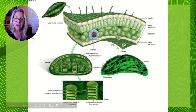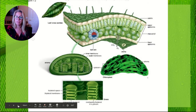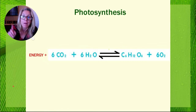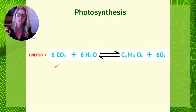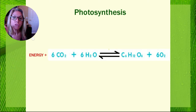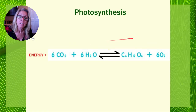Now the overall reaction — you've seen this before. In class I'm going to have you identify what gets reduced and what gets oxidized. The energy comes from the sun. CO2 is going to get reduced into glucose — if you don't know what I mean go back and watch my chapter six AP Bio part three on redox reactions. CO2 gets reduced into glucose; water is going to be oxidized into oxygen.